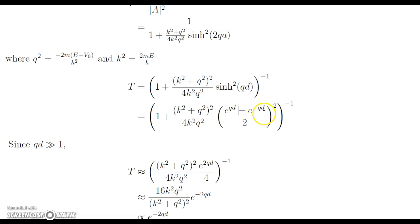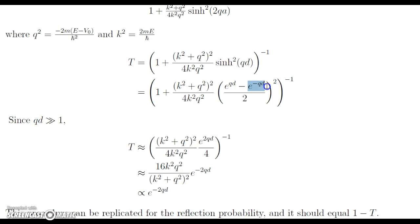Now that we have this, we can apply that since qd is much greater than 1, this part is going to go to 0, because we're going to have 1 over e to something very large, which means that'll approach 0 approximately.